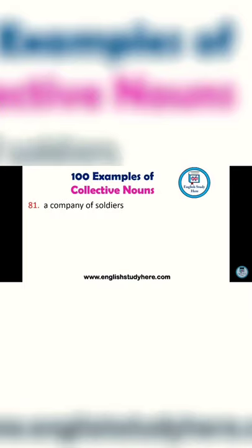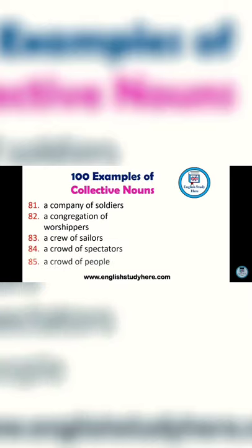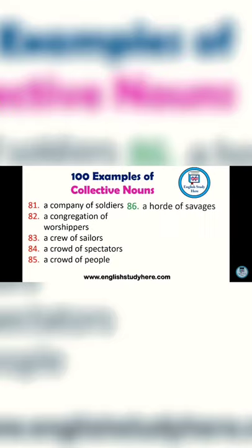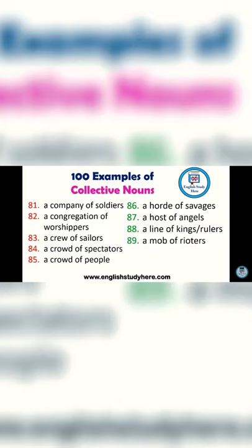A galaxy of stars. A company of soldiers. A congregation of worshippers. A crew of sailors. A crowd of spectators. A horde of savages. A host of angels. A line of kings. A mob of rioters.